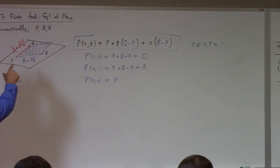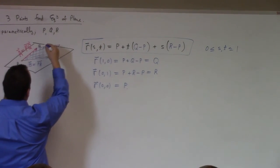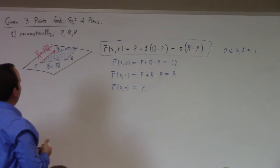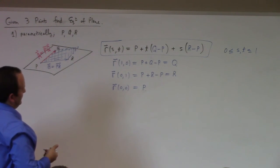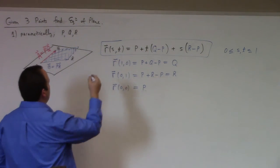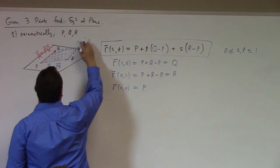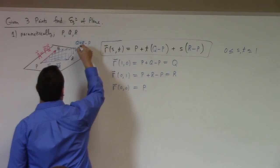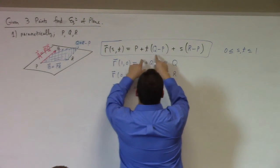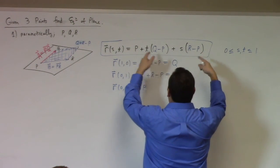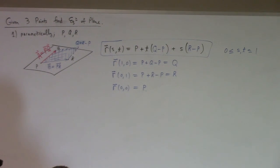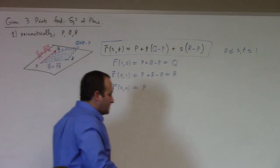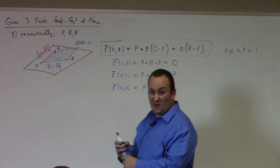The corner at R(1, 1) is P + (Q − P) + (R − P) = Q + R − P. This is not usually the question asked of you, though. More typically, you're asked: given three points, find the Cartesian equation of the plane.